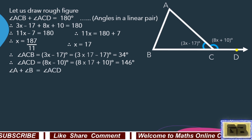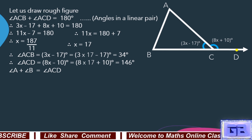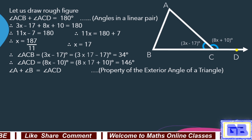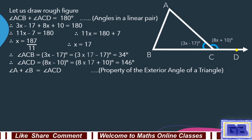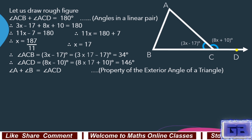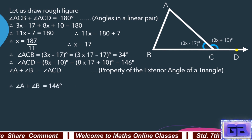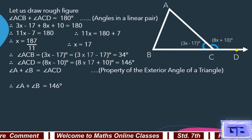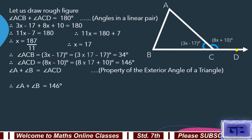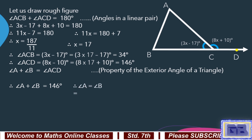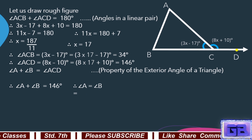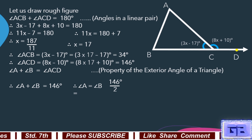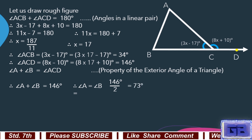By the property of the exterior angle of a triangle, angle A plus angle B equals angle ACD equals 146 degrees. Since angle A equals angle B, each equals 146 divided by 2, which equals 73 degrees.